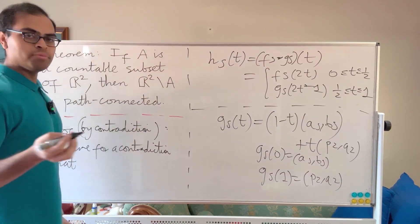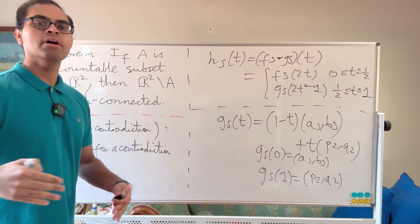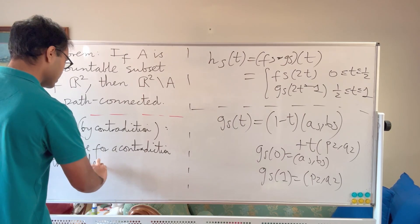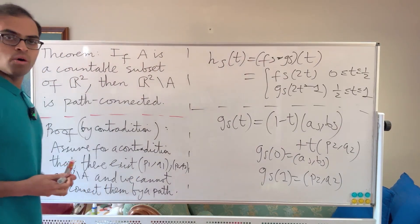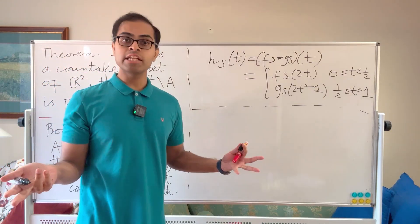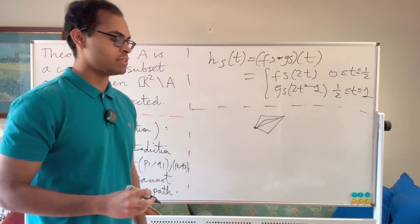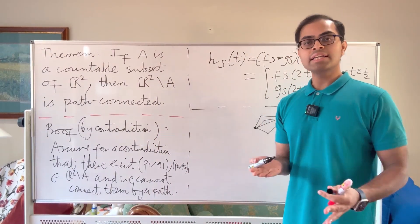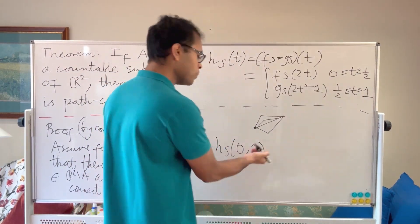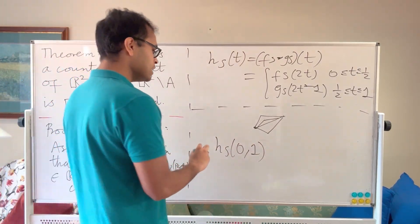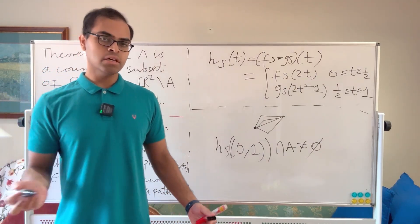Now for the formal proof. Proof by contradiction: assume ℝ² minus A is not path-connected, and pick two points (p1, q1) and (p2, q2) in ℝ² minus A such that no path connects them within ℝ² minus A. As drawn in the picture, we write down all these potential paths — our hs's — for all s ∈ ℝ. Since we've assumed you can't connect them by a path, the image of each hs on the open interval (0, 1) must intersect A.